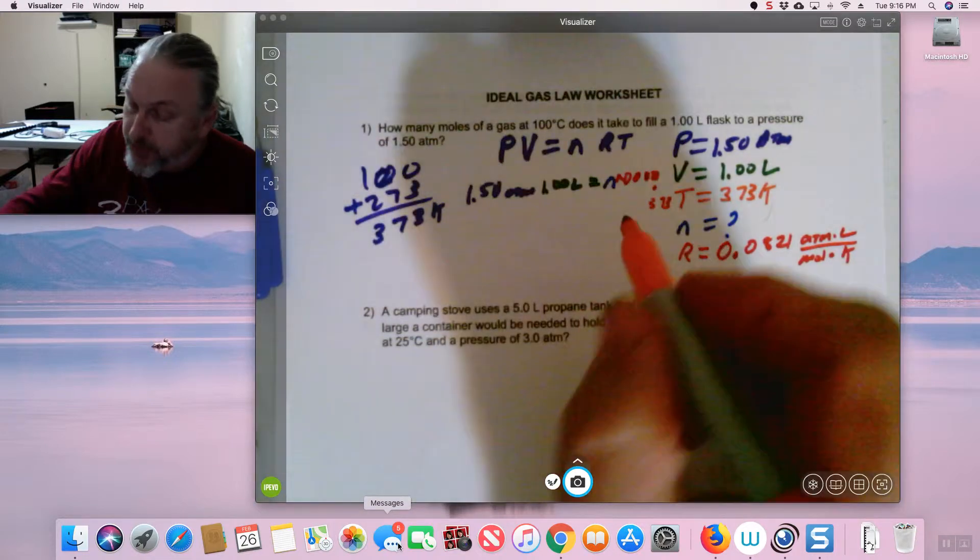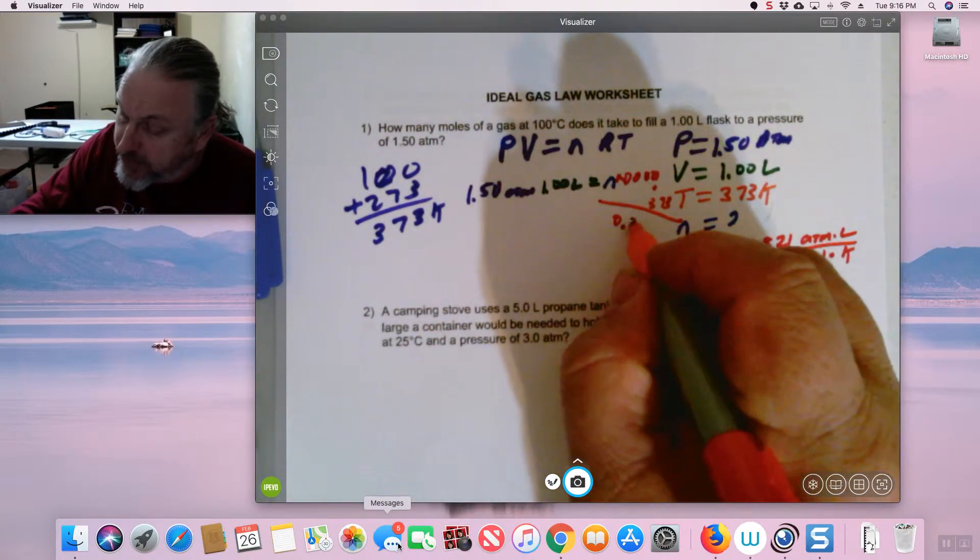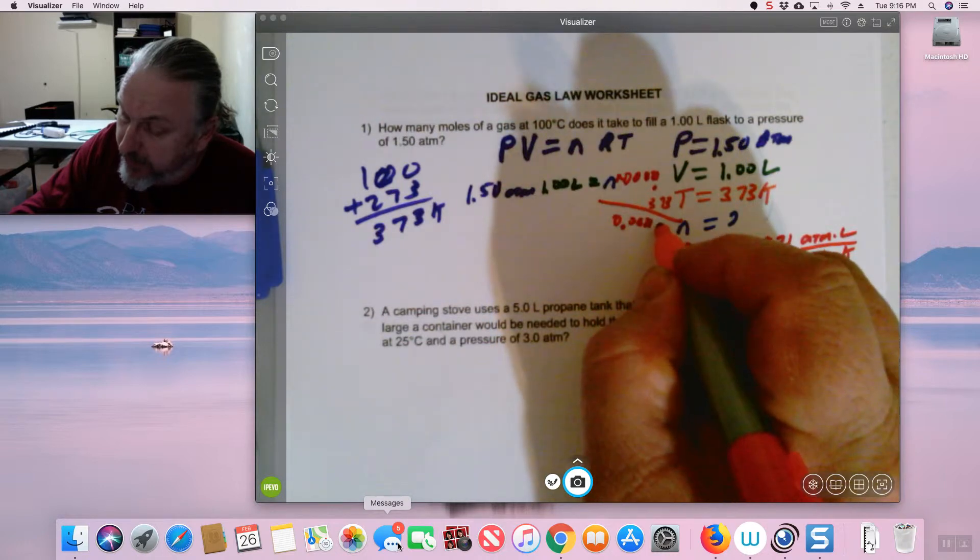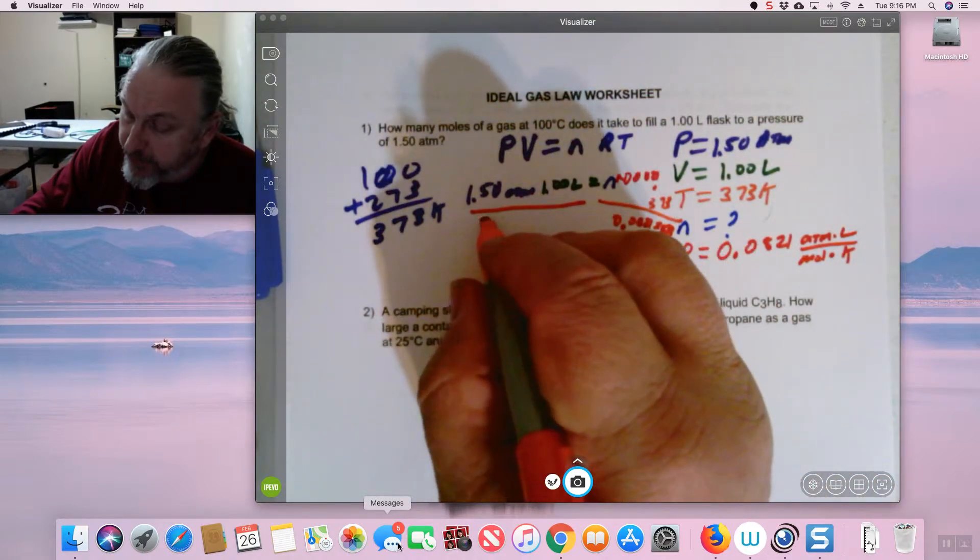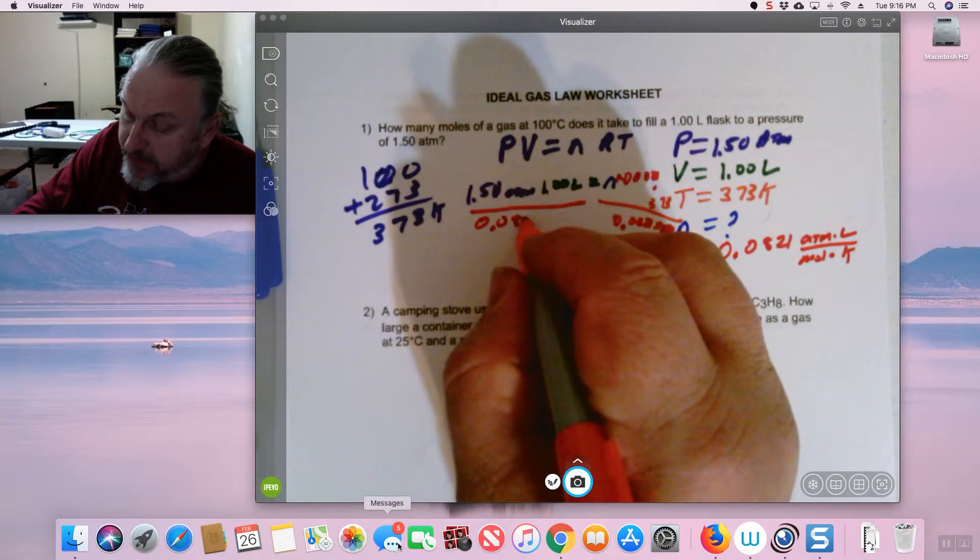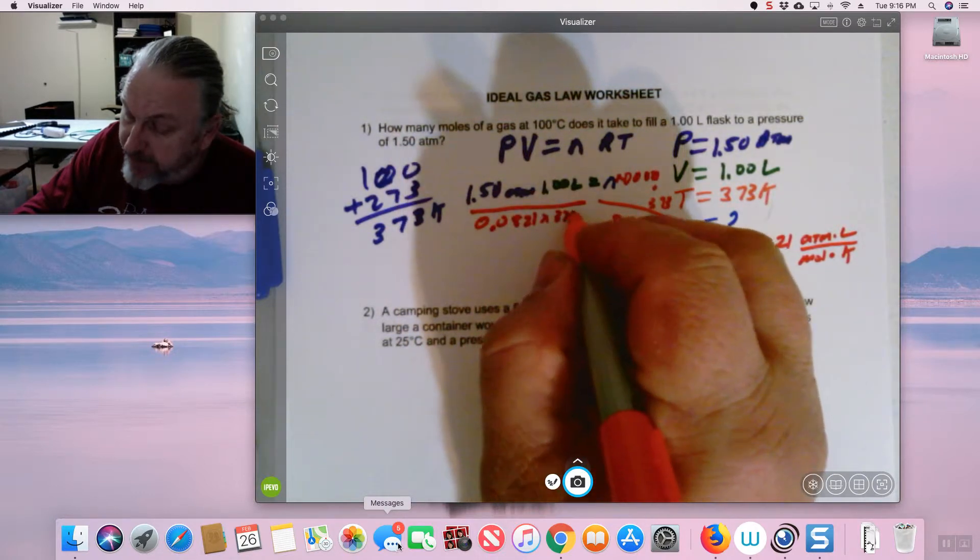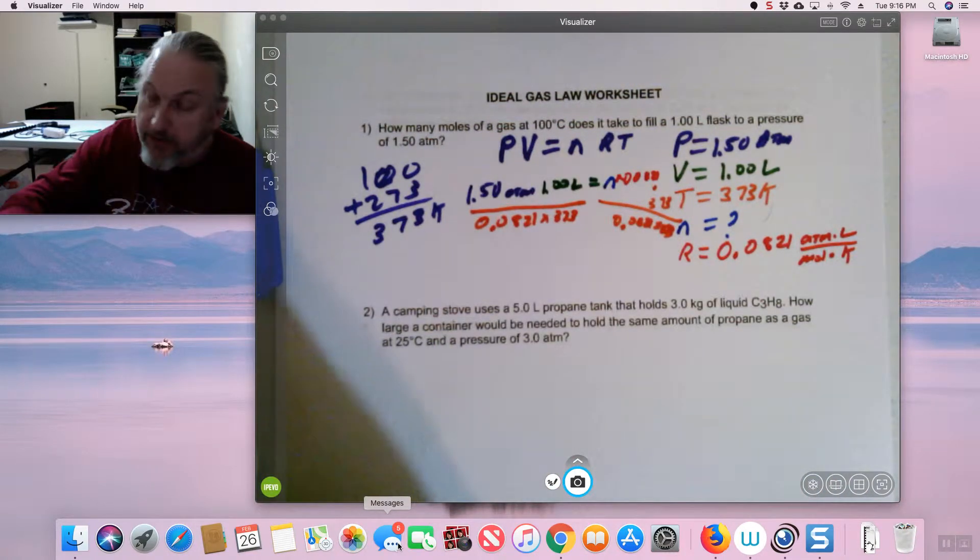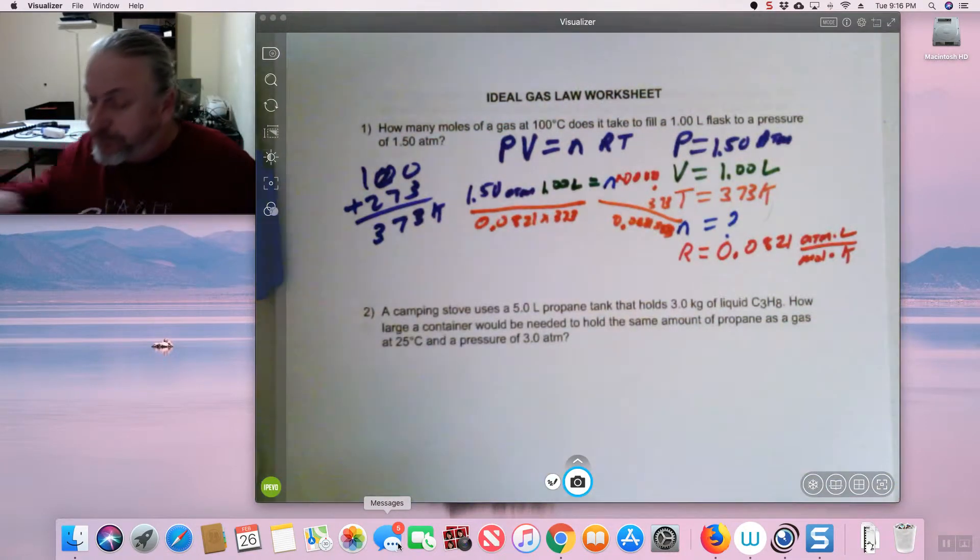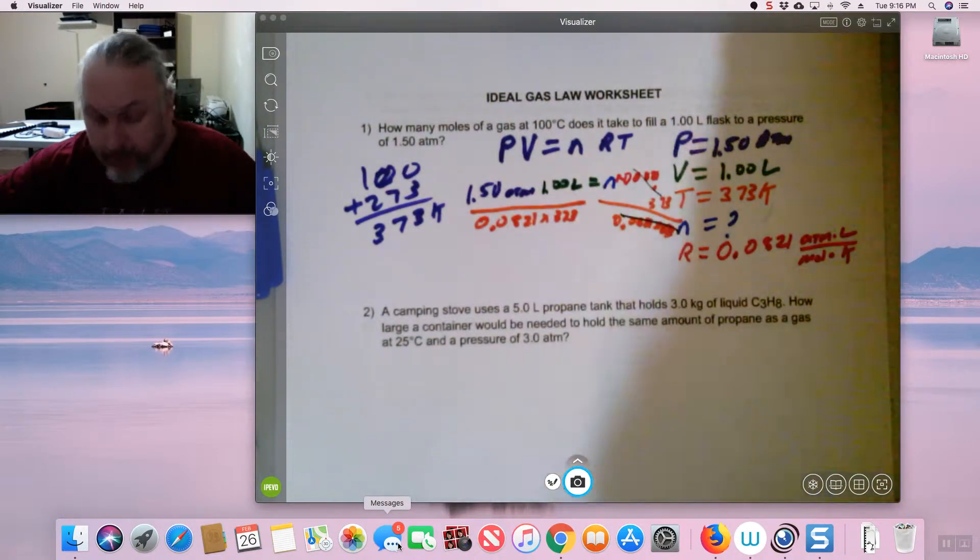So if I do my algebra, I've got to divide through by 0.0821 times 373. That's what I did there. If I do it on one side, you know what I've got to do here, 0.0821 times 373. And if I do my math, that will give you my moles. Let's do it. Oh, and we did what? We crossed, eliminated those, and we're good to go there.